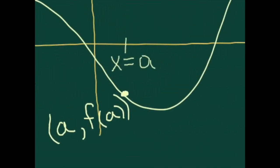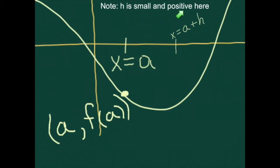Let's zoom into this graph. The next thing to do is to label a nearby point. I'm going to go to the right, so I'm going to say a plus some small quantity, which I'm going to call h. You can think of h as being 0.01, 0.00001, a millionth, a billionth — something that is super small. h is some small and positive quantity. If I add a positive quantity, that's going to put it to the right of x equals a. This new x value has its own coordinates: the x value is a plus h, and the y value I get by plugging a plus h into the function.